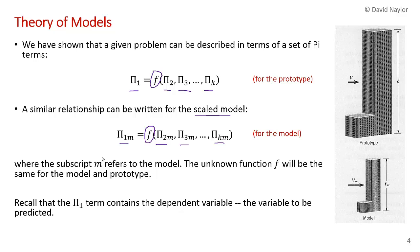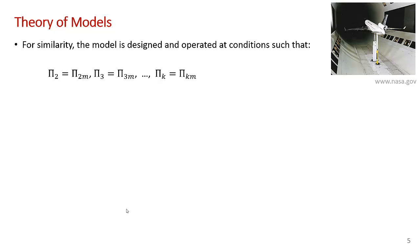Remember that one of the rules when we constructed these pi parameters was that pi 1 contains the thing you're after. For example, if we have a building at some velocity, we might be looking at the drag on the building. So the drag force would be contained in this pi 1 parameter. So it contains the dependent variable — the variable to be predicted.